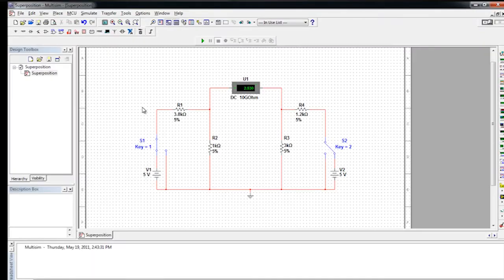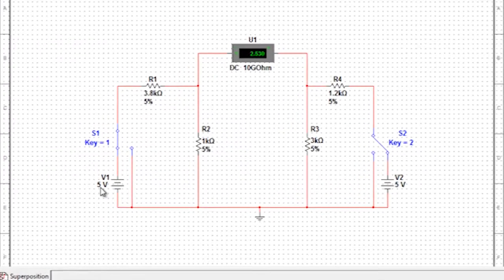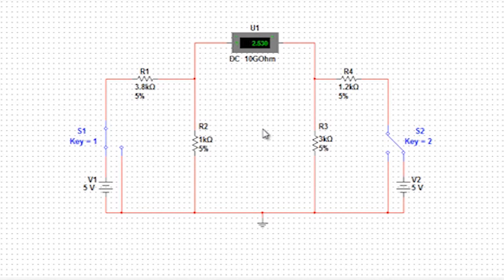I'm going to start off using NI Multisim to simulate the circuit. I have already built the circuit with the two power supplies and the voltage dividers, and I have placed a voltmeter here in the center. I have also added two single-pole double-throw switches that will allow me to short out the power supplies during simulation mode.